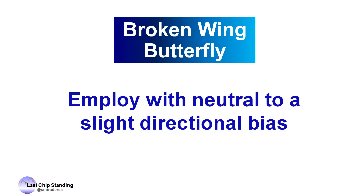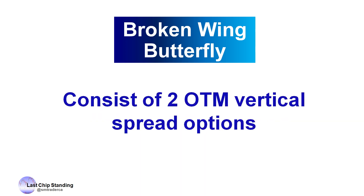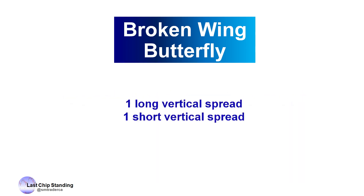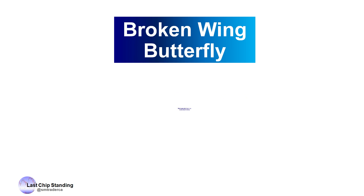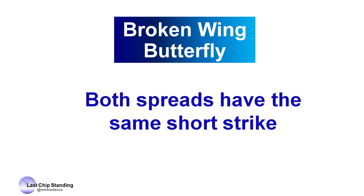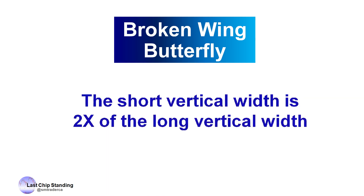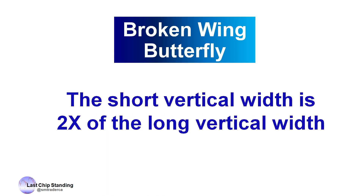A Broken Wing Butterfly consists of two out-of-the-money vertical spread options — one long vertical and one short vertical. Both of these verticals have the same short strike, and I will show you what I mean by that when we look at a trade later.